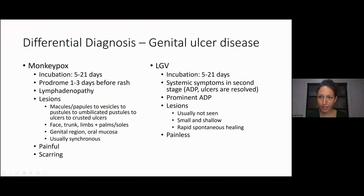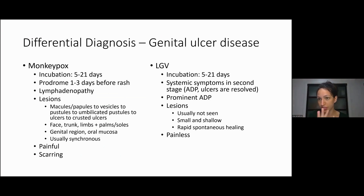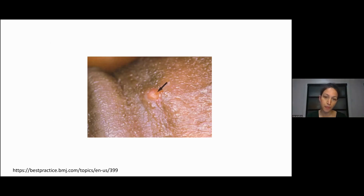LGV has incubation of five to 21 days. They can have systemic symptoms in the second phase — first there's a little ulcer, but it's very small and usually transient, and a lot of people miss it. Then in the second phase they have swollen lymph nodes and systemic symptoms, but usually no ulcer by that phase. The ulcer when present is small, shallow, heals on its own very quickly, totally painless. Very different from monkeypox, which presents with an ulcer and lymph nodes and systemic symptoms at the same time — here the tiny ulcer comes first, heals, and then the lymph nodes appear.